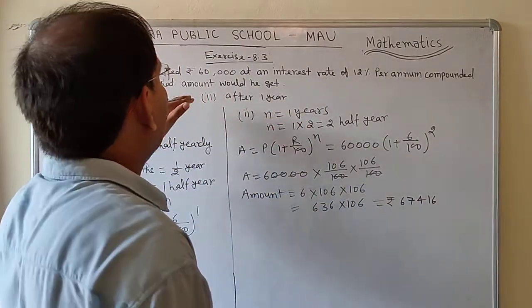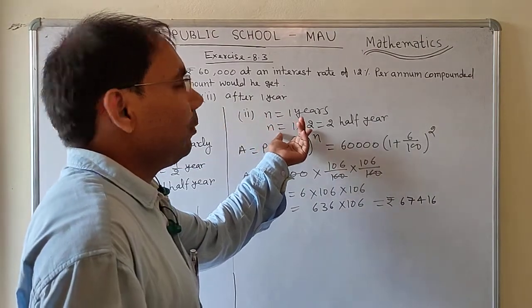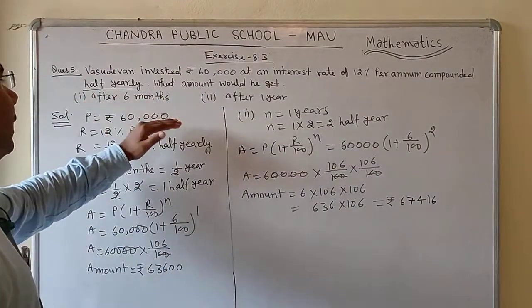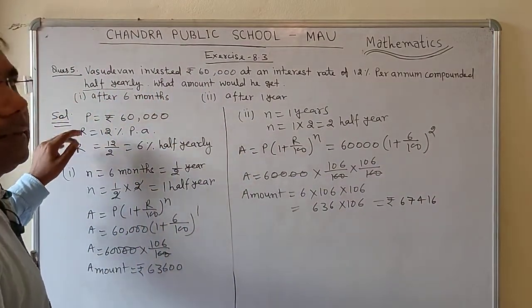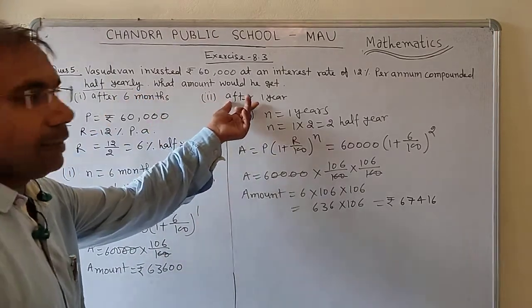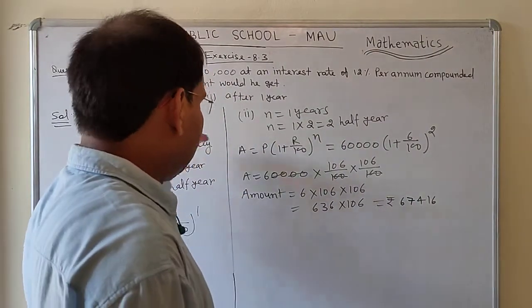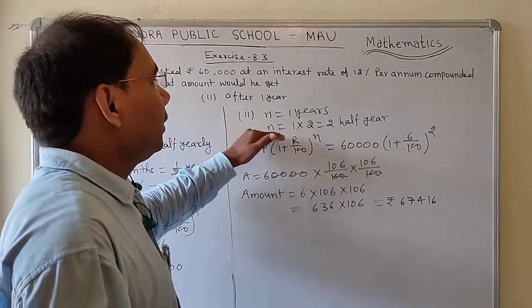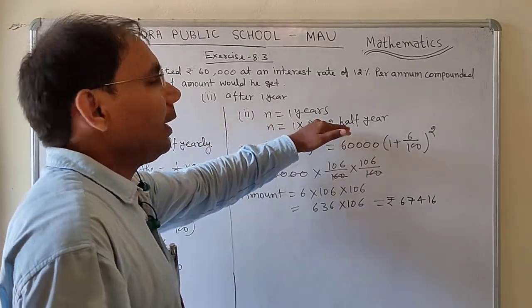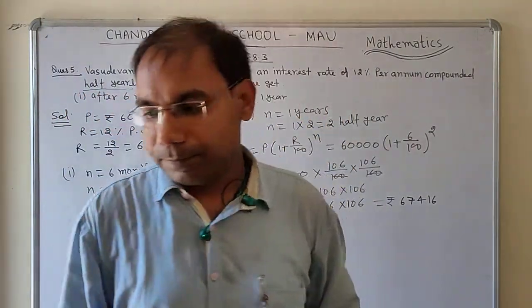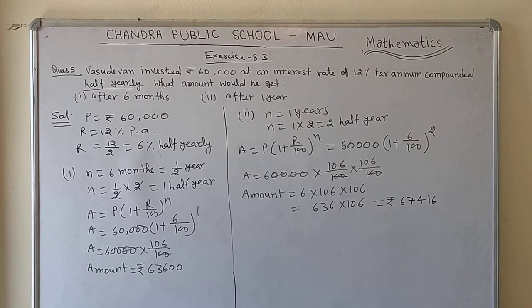Since the interest is paid half-yearly, that is why we multiplied the time by 2. That is the complete way to solve this question.